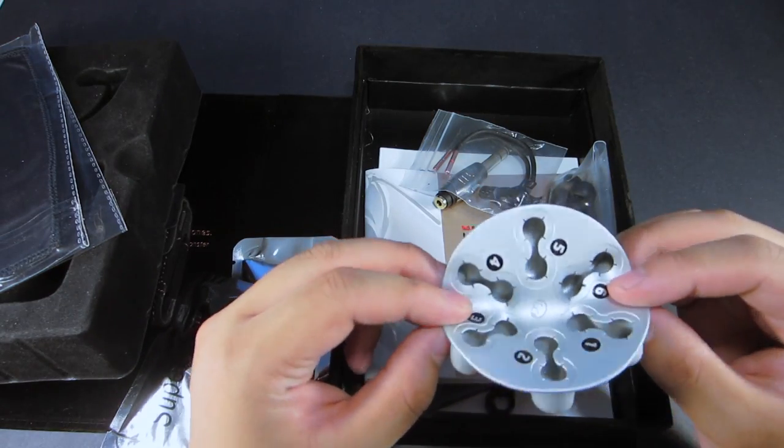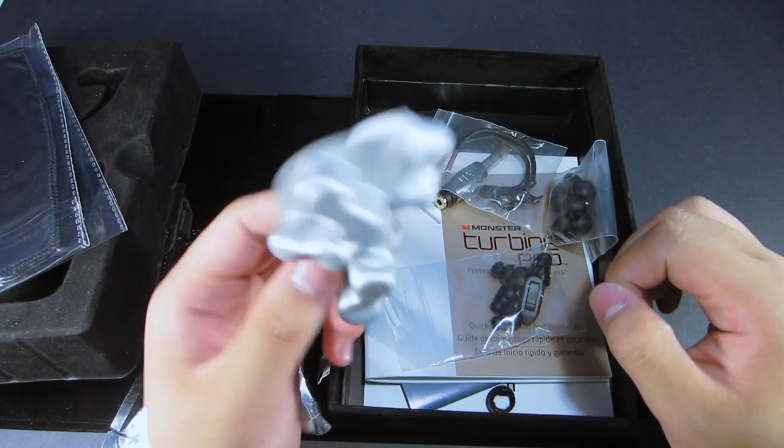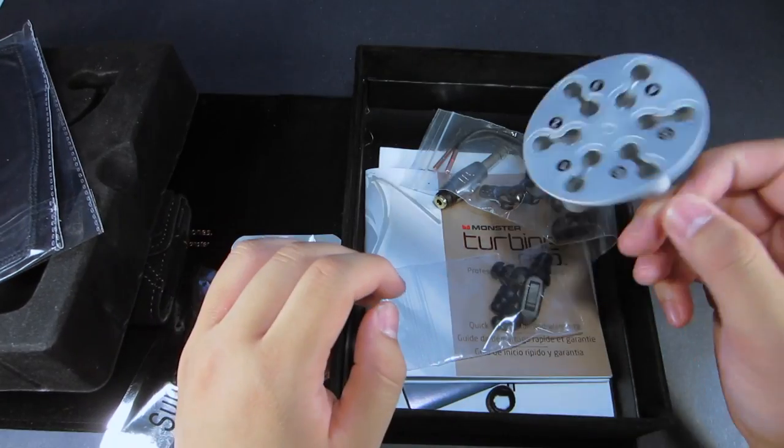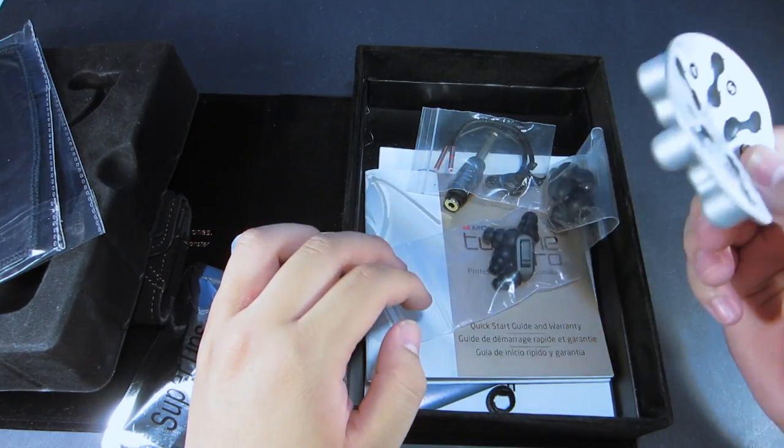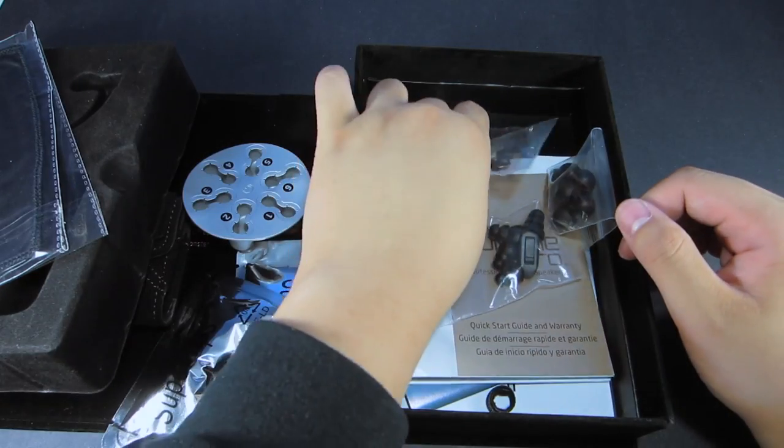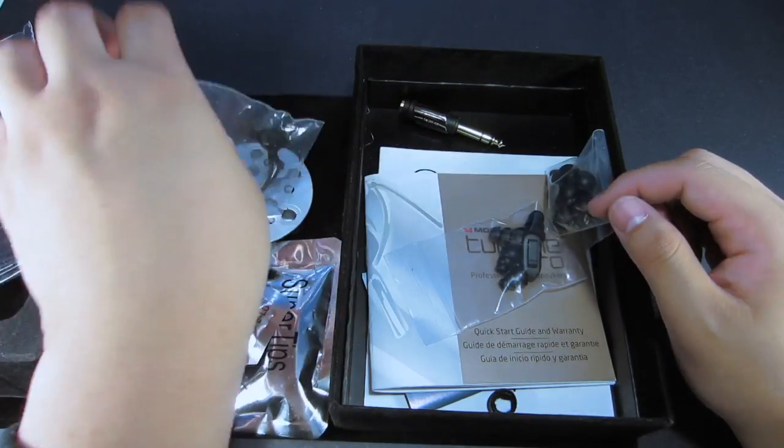Also if you're to store it, you can actually fold it up in half just like so to save some space. This is something that you actually want to be using when if you buy the Turbine Pro Coppers. Here we have a pair of ear hooks. Of course they do bend to the shape of your ear.